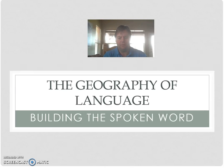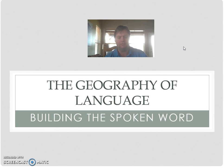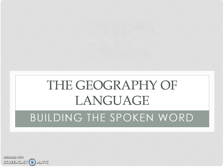Welcome, human geographers. We're going to talk about one of the three pillars of human geography. We'll talk about the main pillar — ethnicity — and then language and religion stem off of that. We're going to talk about geography and language in this chapter.